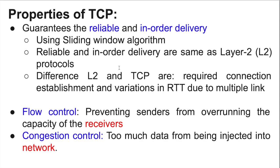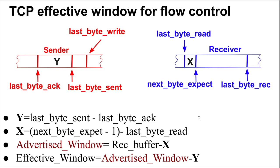TCP properties include reliability and in-order delivery using the sliding window protocol, operating at Layer 4 (end-to-end, process-to-process) across multiple links. TCP supports flow control — preventing the sender from overwhelming the receiver's capacity — and congestion control — preventing too much data from being injected into the network. Flow control is with respect to the receiver, and congestion control is with respect to the network.